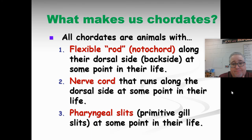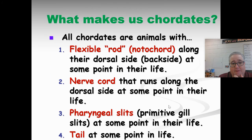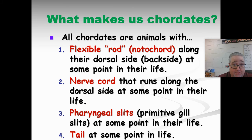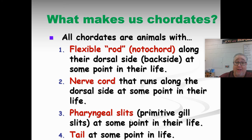Another thing all chordates have is pharyngeal slits — basically primitive gills. They form in the embryo stage. When humans are embryos, around seven to ten weeks old, we don't have lungs yet — we have pharyngeal slits along the head region. As we develop into a baby, we lose those and develop lungs. But in fish, those pharyngeal slits turn into functioning gills. So at some point in life, all chordates have those.